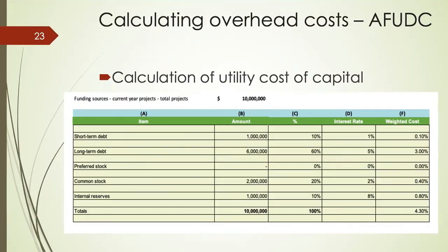FERC details a formula that is the industry practice for calculating the utility's cost of capital. Every year you'll have a stack of projects that need to be done, and you're looking for various financing sources. You could issue short-term debt, long-term debt, and if you're an investor-owned utility, you could issue stock. You can also use your own internal reserves to fund projects, and there is a specific interest cost attached to each one of those financing options.